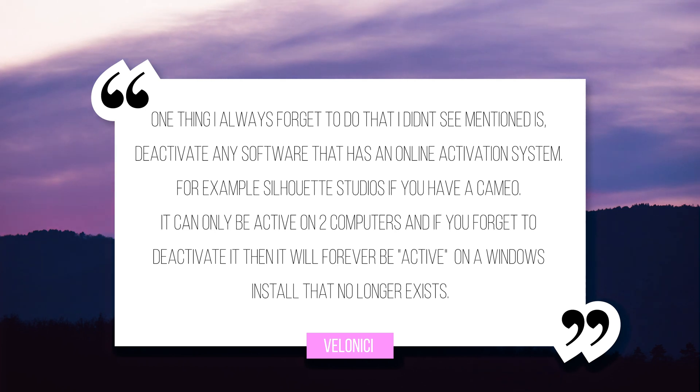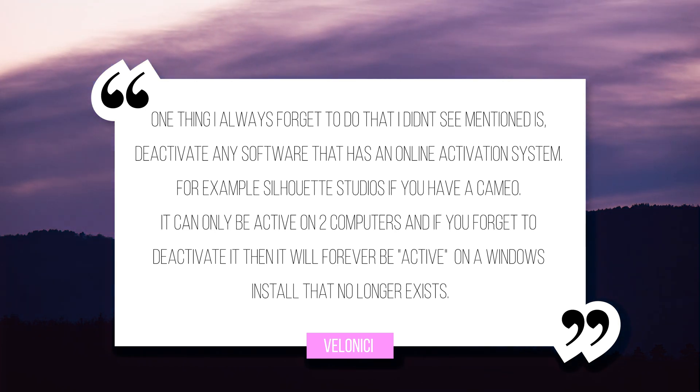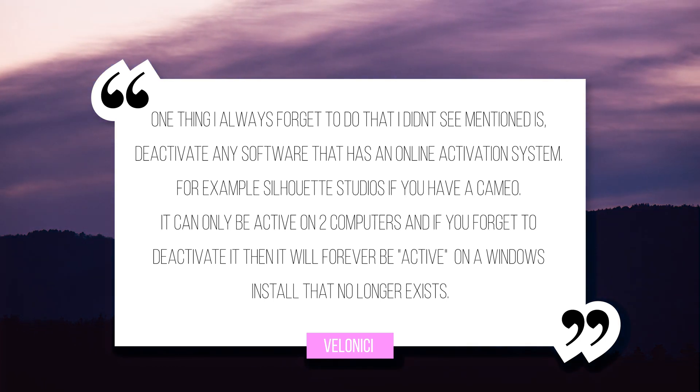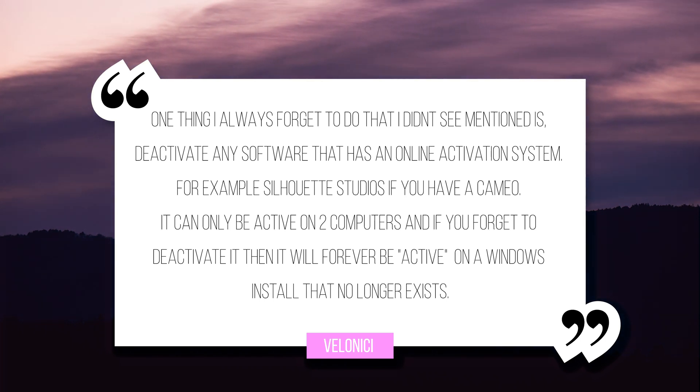Before I leave, I wanted to add some additional tips from viewers from the last two videos. Velenici said: one thing I always forget to do is deactivate any software that has an online activation system — for example, Silhouette Studio if you have a Cameo. It can only be active on two computers, and if you forget to deactivate it, it will forever be active on a Windows install that no longer exists. They should give you the option to deregister devices via an online portal — like Adobe Premiere Pro, which has an online option to deregister so you can deregister your old computer and register the new one.